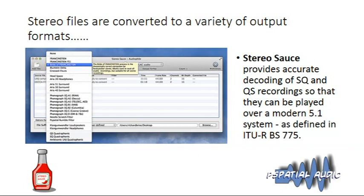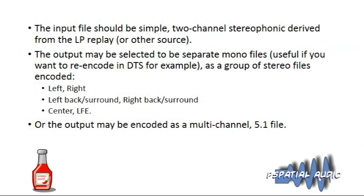The input file is always stereo, just as it comes off the record or tape — this isn't necessarily a vinyl-only phenomenon. We take this two-channel stereophonic input, and the output can be encoded in various ways: as five mono files (e.g., for DTS encoding), as a series of stereo files for left/right and left-back/right-back, or as a single multi-channel file in WAV, broadcast WAV, AIFF, AIFFC, or FLAC.